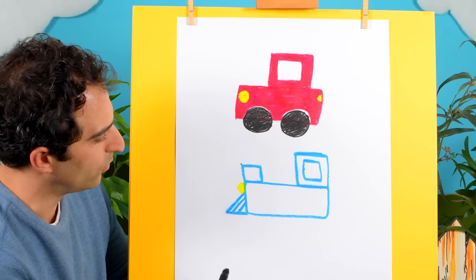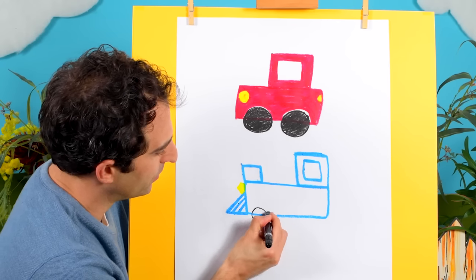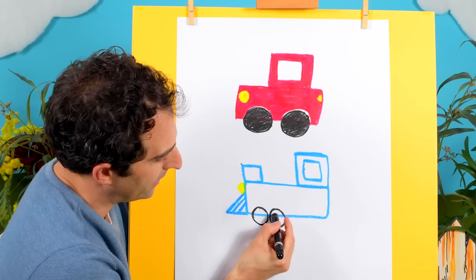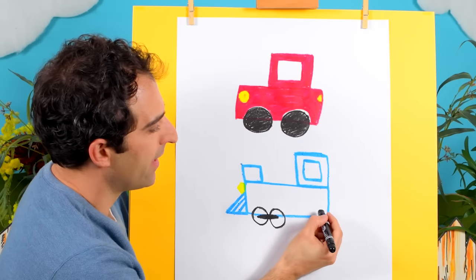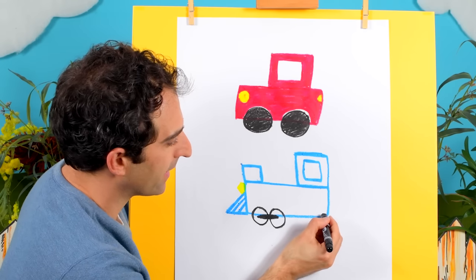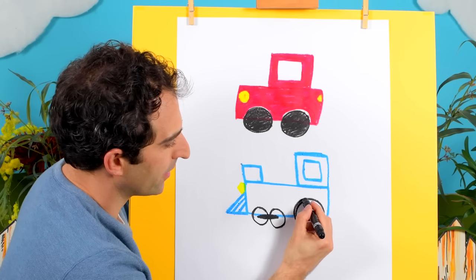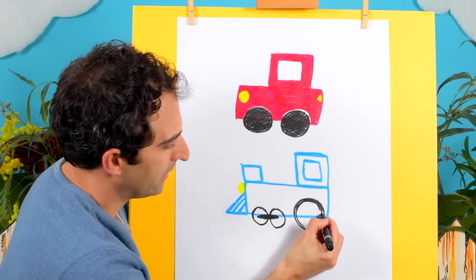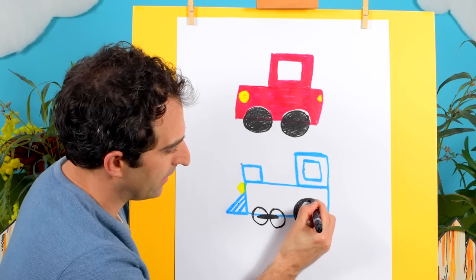And some wheels. What we'll do is, we'll draw two little wheels here. And draw a line that connects them. And then, we'll draw a big wheel at the back. A big circle. There we go. And we can thicken that black line up, like that.